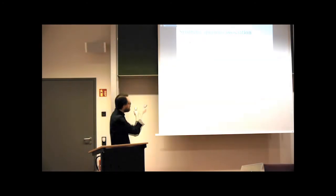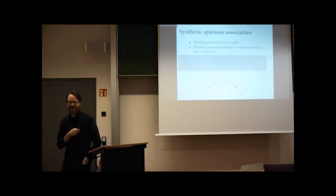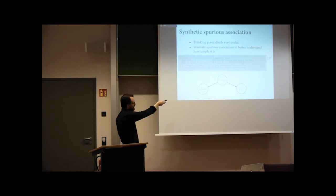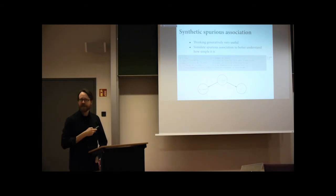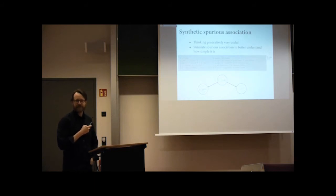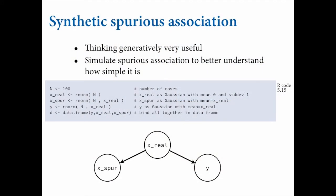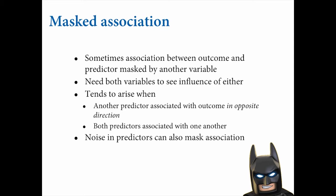You put these in a data frame and analyze using multiple regression. The classic problem arises: x_spur will easily predict y in a bivariate regression, but if you put both x_real and x_spur in the model, x_spur gets knocked out — its beta coefficient is close to zero and straddles zero. There are a number of boxes in the book going through these simulation examples. They help you understand how you can learn about these methods and the limits of statistical inference, because often you can construct causal scenarios where it's impossible to figure out what's actually driving the outcome.